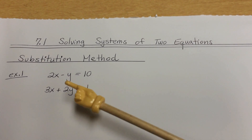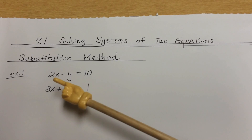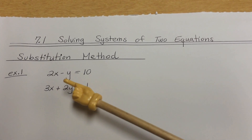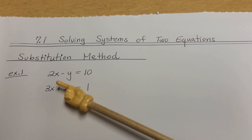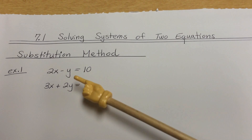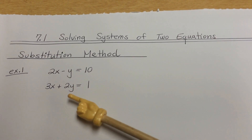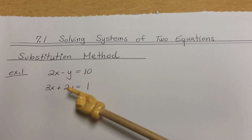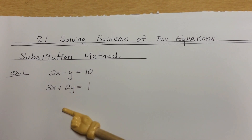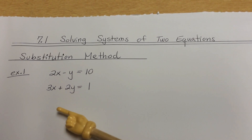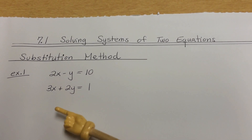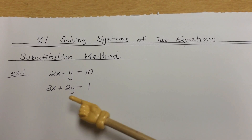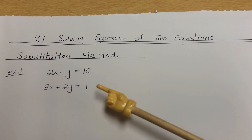When you have two equations, most likely you'll have two unknown variables. Both x and y are unknown, and that's what we're solving for. If you have three equations, then most likely you're also going to have three variables, so sometimes you'll start seeing x, y, and z as well.